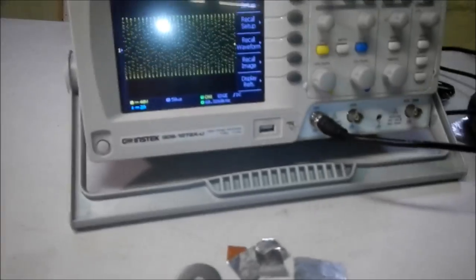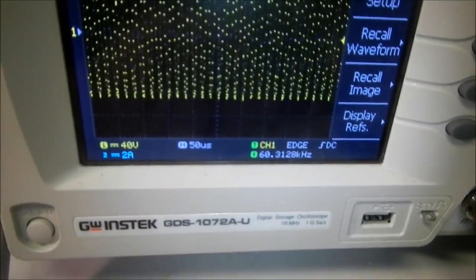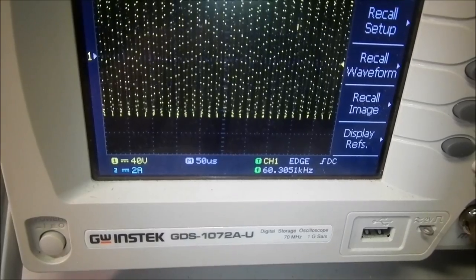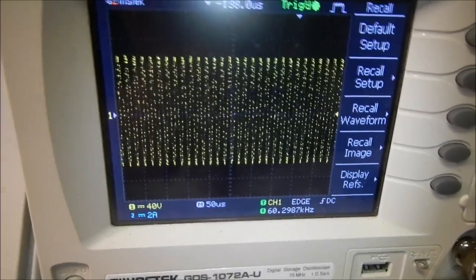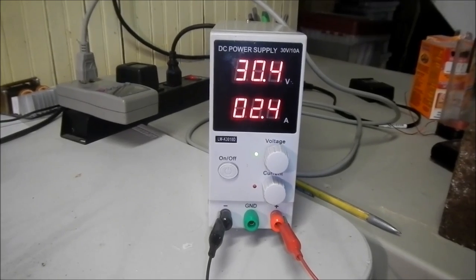Now what you'll see is the resonant frequency has shifted up to 60 kHz. So now with the copper slugs, the resonant frequency is 60 kHz. With the slugs in, we have 2.4 amps of current draw.